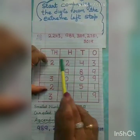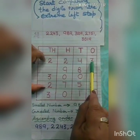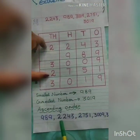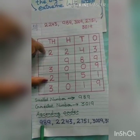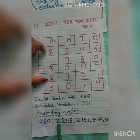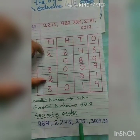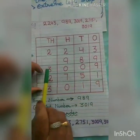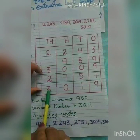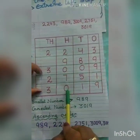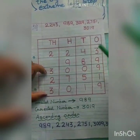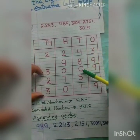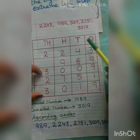2 is smaller than 7. That means 2,243 is smaller than 2,751. We place them in order: first the smallest number 989, then 2,243, then 2,751. For the remaining two numbers, their thousands place is the same and their hundreds place is also the same, so we compare their tens place. We find 0 at the tens place in one number and 1 at the tens place in the other.